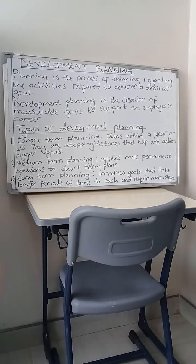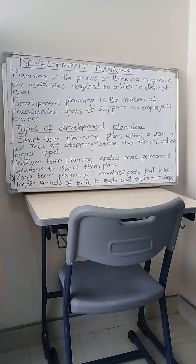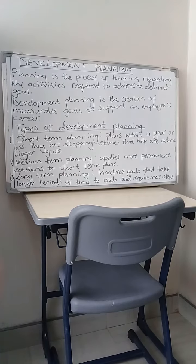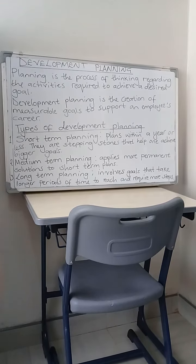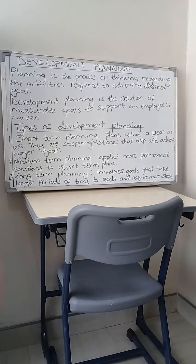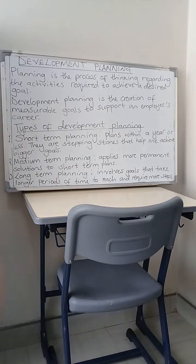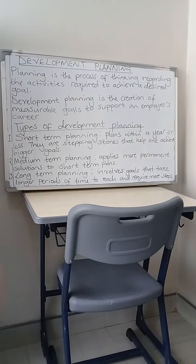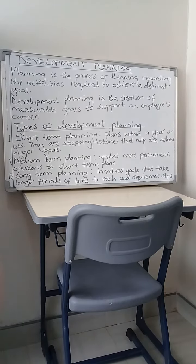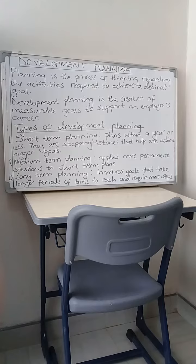There are three types of planning: short-term planning, medium-term planning, and long-term planning. Short-term plans are plans within a year or less. They are stepping stones that help one achieve bigger goals. These may be daily plans, weekly plans, monthly plans, or yearly plans — a plan within a year is considered a short-term plan.